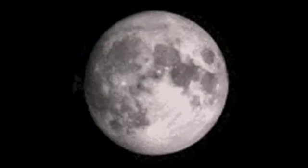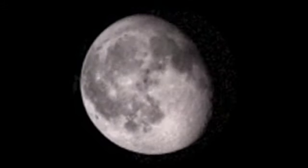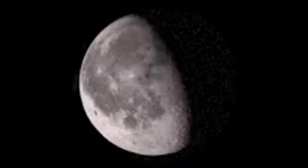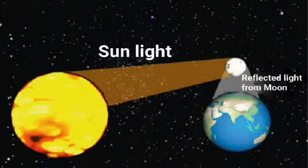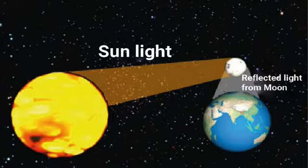The shape of the moon is not changing throughout the month. However, our view of the moon does change. The moon does not produce its own light. There is only one source of light in our solar system and that is the sun.